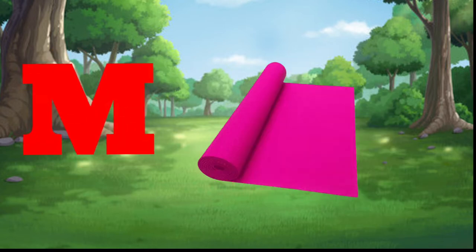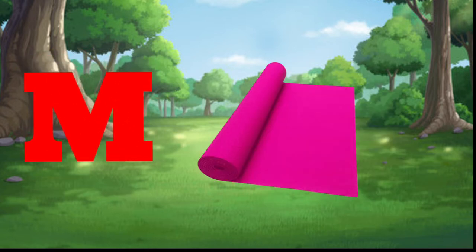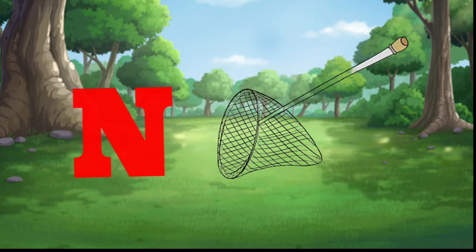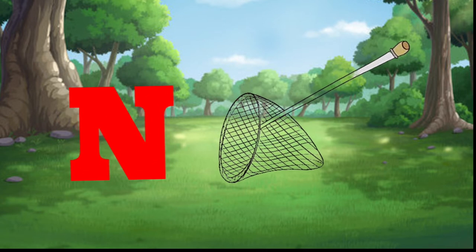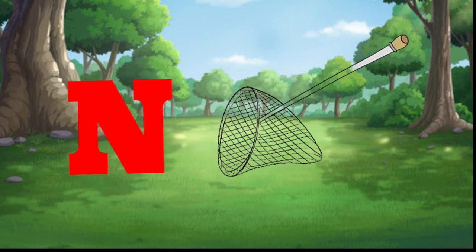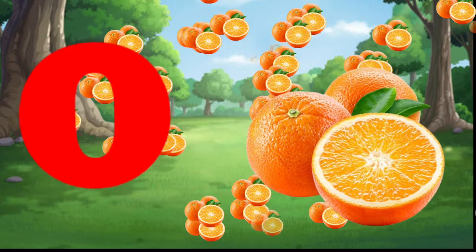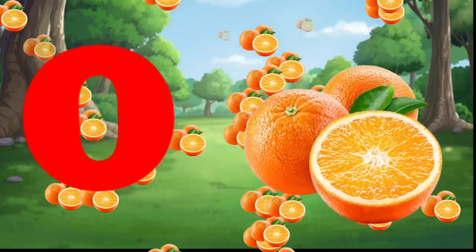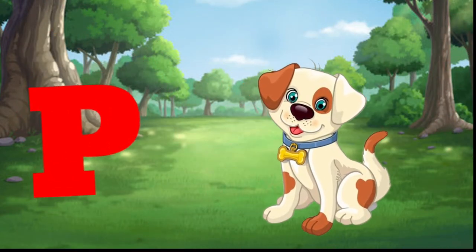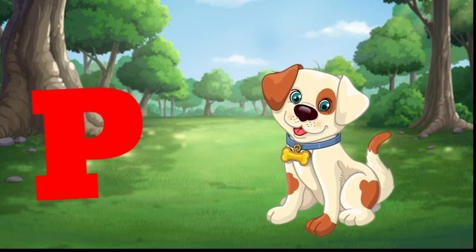M is for mat, m-m-mat. N is for net, n-n-net. O is for orange, o-o-orange. P is for pet, p-p-pet.